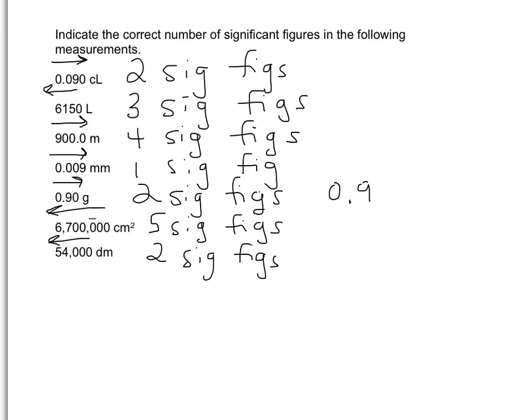Measurements like these are very poor. Those zeros are just holding place, so our measuring instrument was not able to measure the ones place, the tens place, or the hundreds place. Our measuring instrument only started measuring at the thousands place, and that's our estimated digit in this measurement — so this isn't a very good measurement, and not a very precise measuring tool was used.